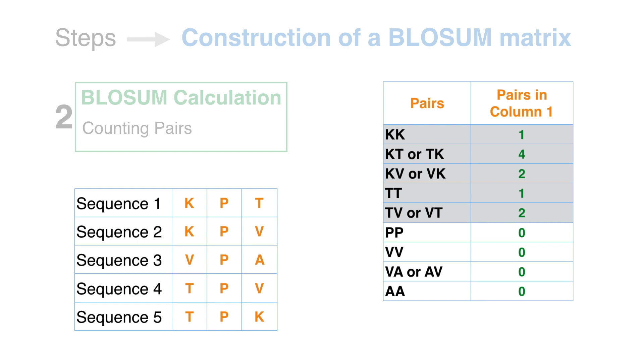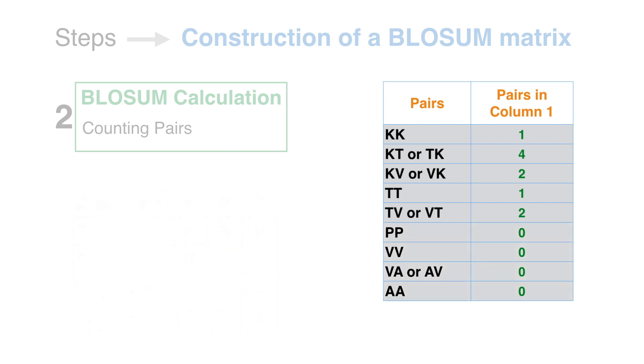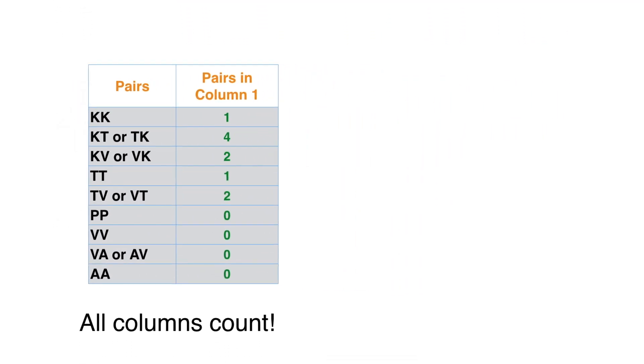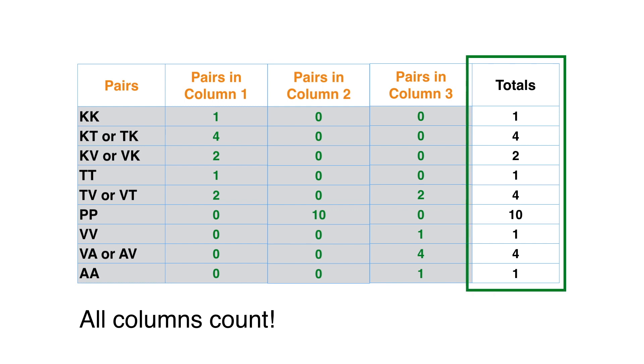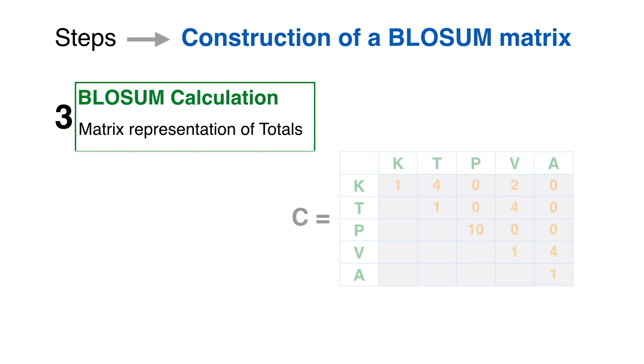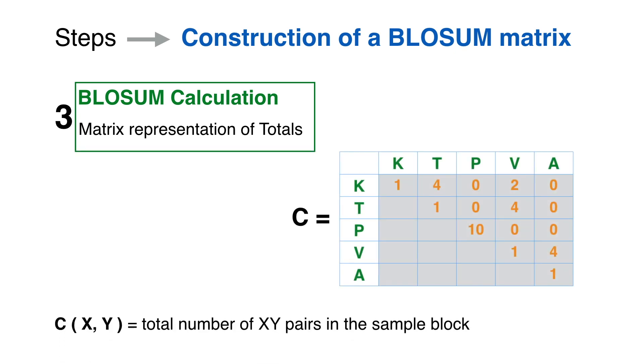This is a particularity of this example. In practice, as there are several blocks with a great variety of data, all pairs are indeed observed. The result of counting pairs column by column is stored in a table, and each row in a table is added to get the total number of occurrences of each pair in the block under study. These totals are represented in a matrix. Each entry in this matrix is the total count of pairs formed with the row and the column characters.